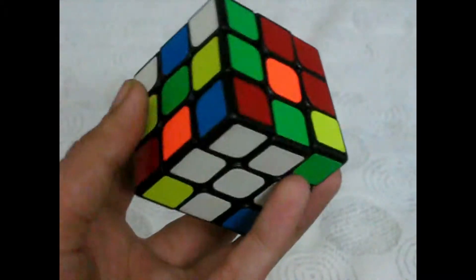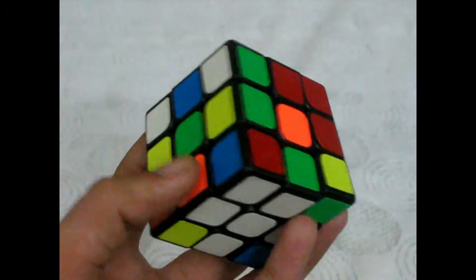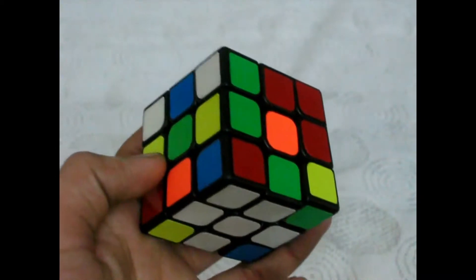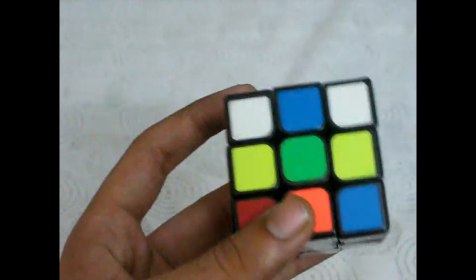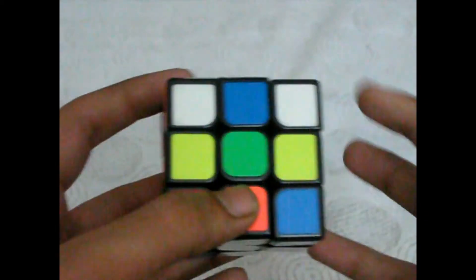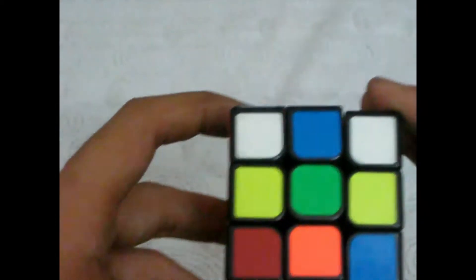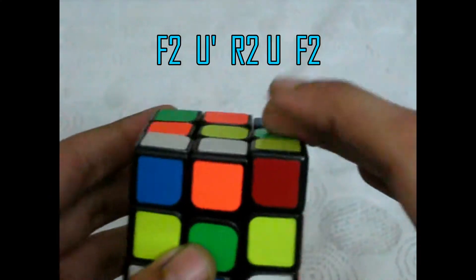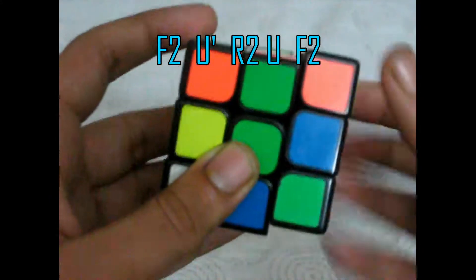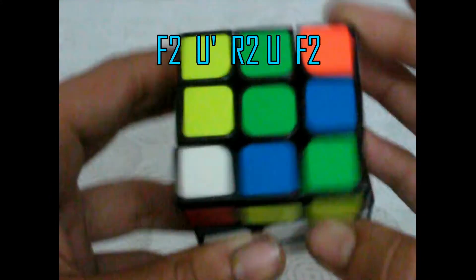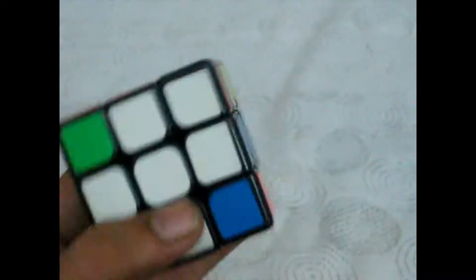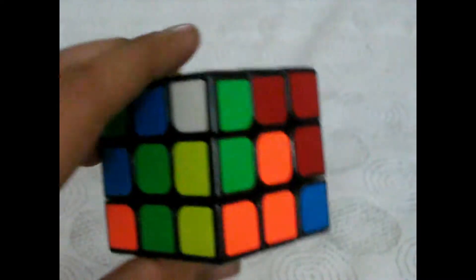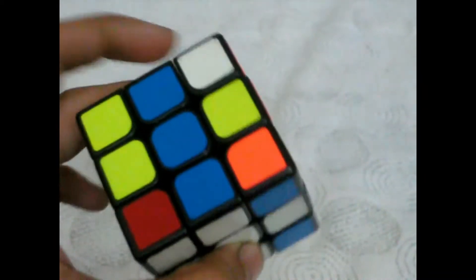So guys, now I have made the first case, that is when the adjacent edges are swapped. To solve this we keep the left swapped edge in front of us while keeping the white as the base, and perform the algorithm f2 u prime r2 u f2. So now our adjacent edges have been placed at the right place and now we can move on to case 2, that is placing parallel edges at the right places.